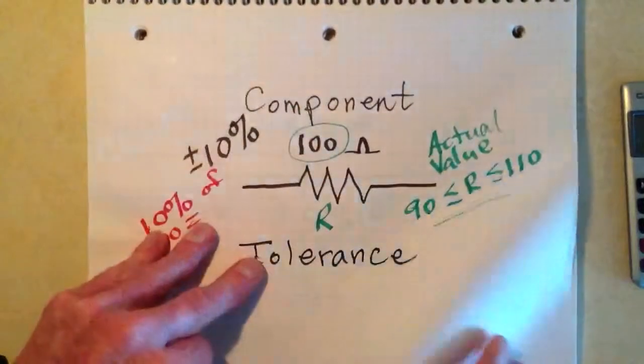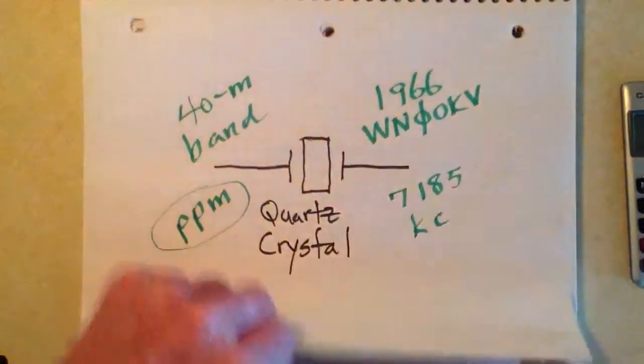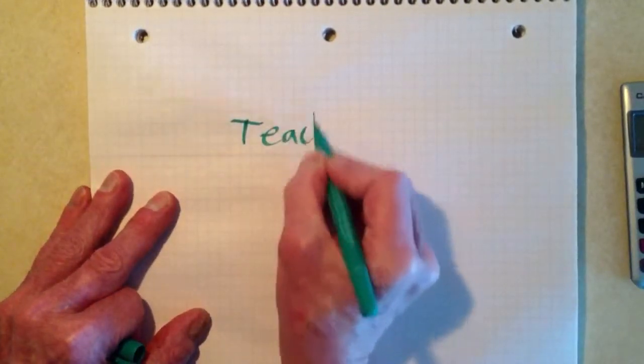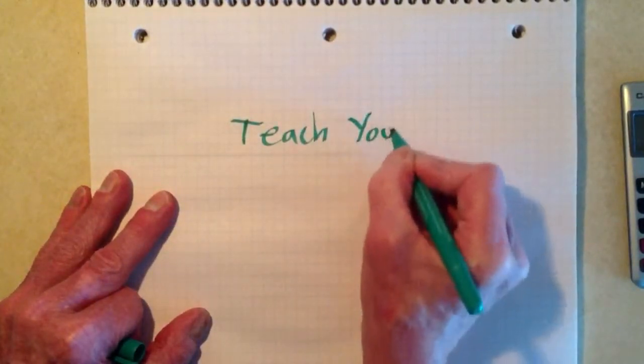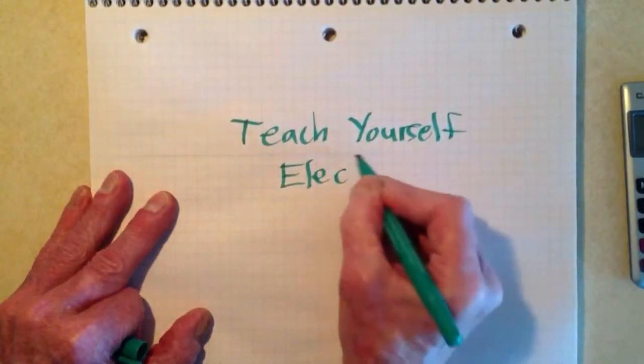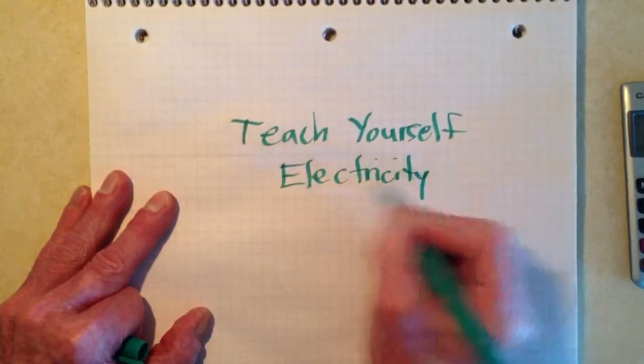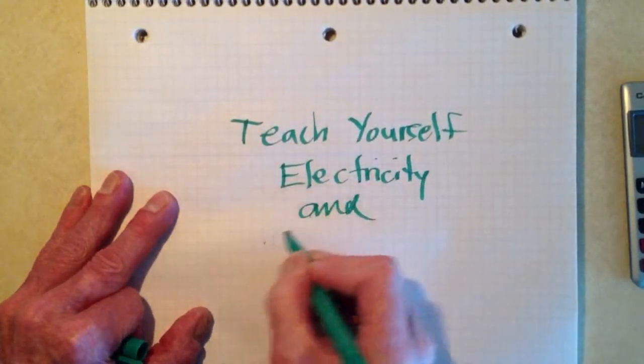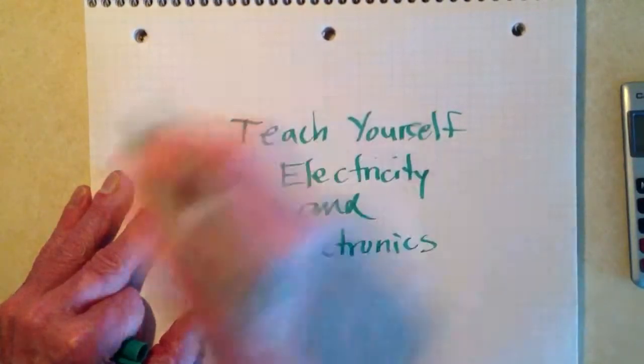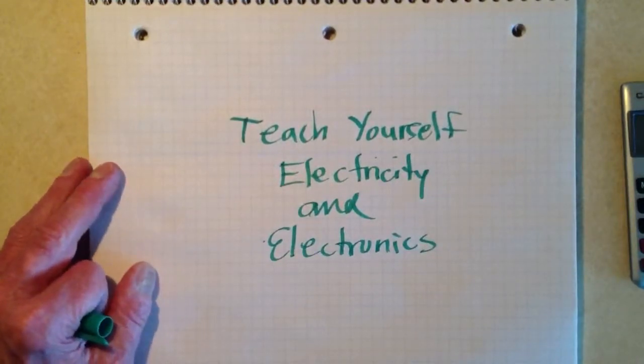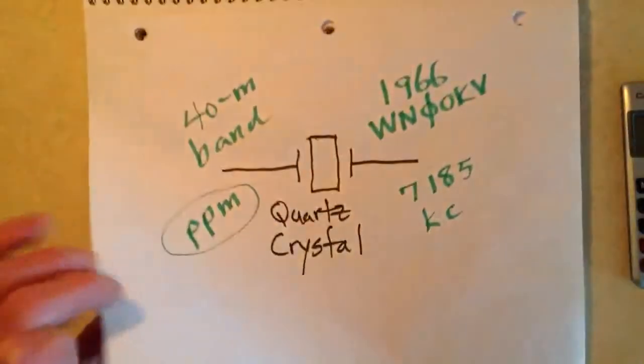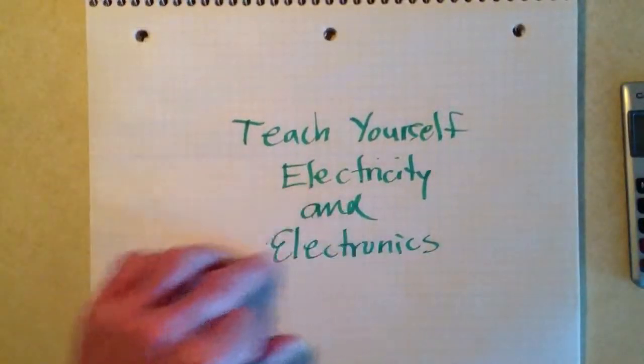All of this and more is described and defined in my book, Teach Yourself Electricity and Electronics. And it also tells you the color codes on resistors that you can actually figure out what the tolerance is as well as what the value is. They use colored bands to do that.